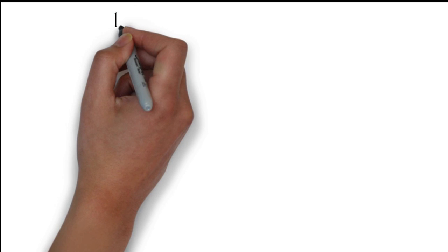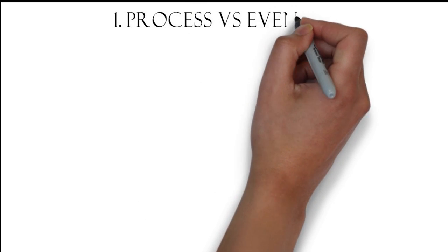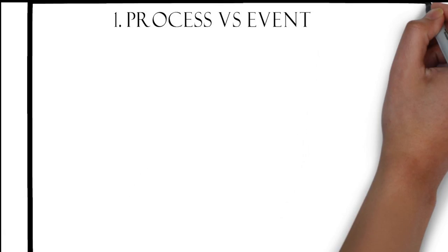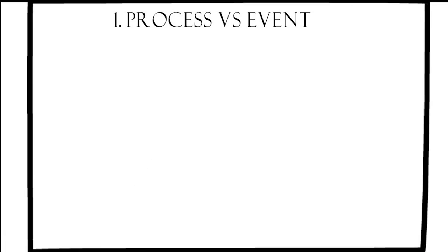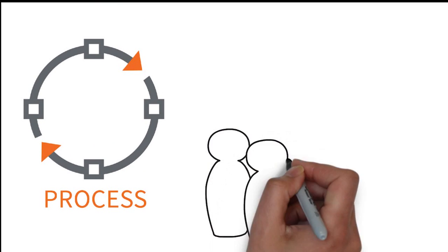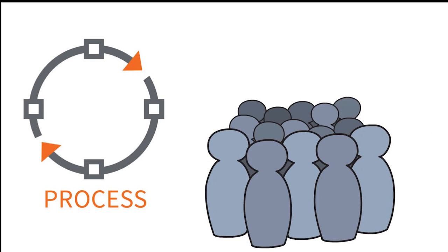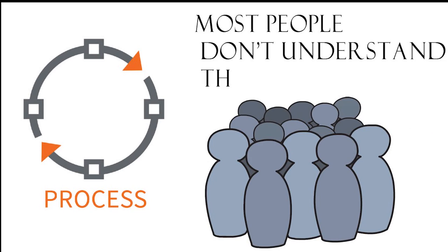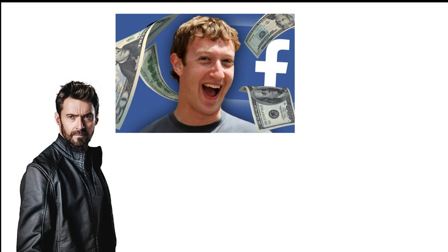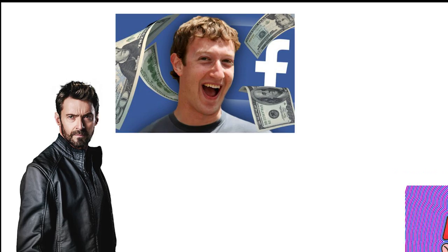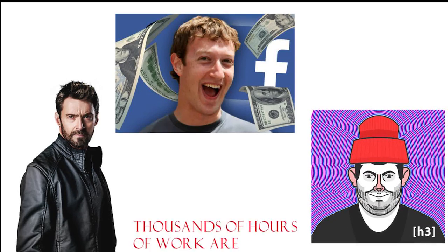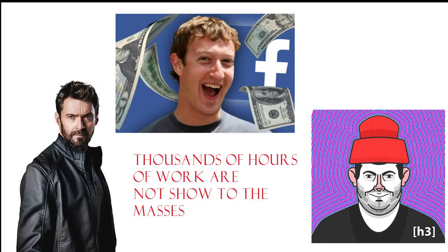Takeaway number one and perhaps the most important takeaway from the book is the process versus the event. Entrepreneurship, not just entrepreneurship, many successful ventures consist of many processes that go unheard by the masses. The script would have you believe that things happen due to sudden events. For example, the script will have you believe that the actor gets the blockbuster role from an event. Some college kid invents the biggest social media site on planet earth from an event. The YouTuber becomes a millionaire from an event.